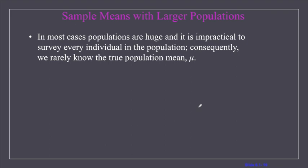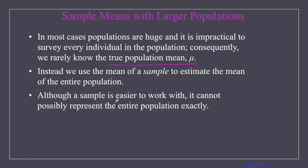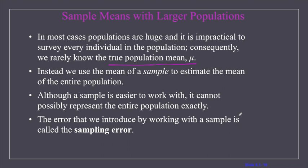In most cases, populations are huge and we cannot survey every person. It's also true that we rarely know the true population mean — this would require sampling everybody. So instead, we use the sample mean to estimate the mean of our entire population. We use this one value from our sample to estimate the mean of an entire population. Although a sample is easier to work with, it's possible that it doesn't represent the population exactly. The error introduced when working with a sample is called the sampling error, and this is always going to be a factor.